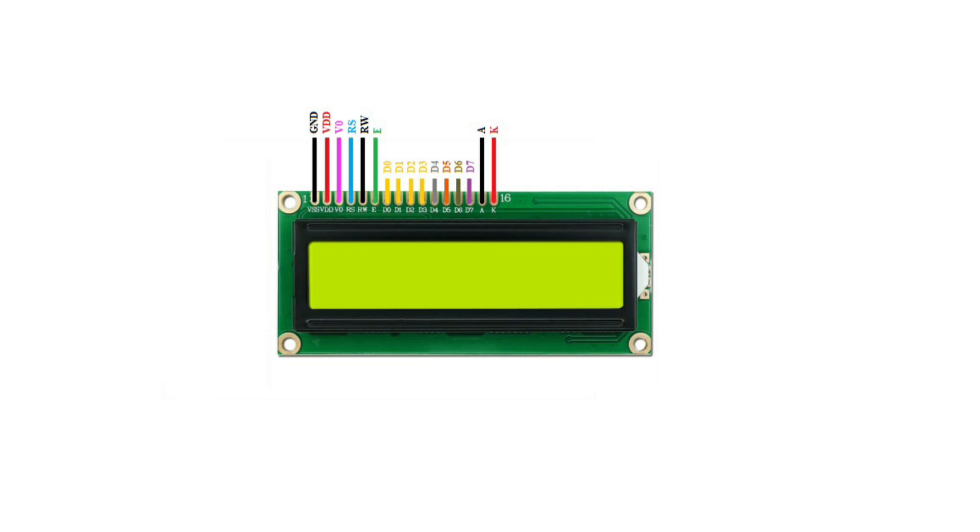E pin is number 6 which high to low pulse enables the write operation and low to high pulse enables the read operation. Next 8 pins D0 to D7 are data pins. We can use these pins as 8 bit or 4 bit mode for displaying text. Next comes the A and K pin which are anode and cathode for LCD backlight control.